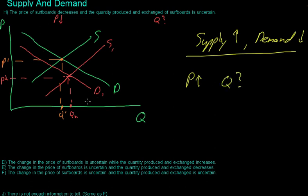And so I want to just emphasize again why the quantity, sorry, price is not going up. Price is going down, and the quantity is uncertain.